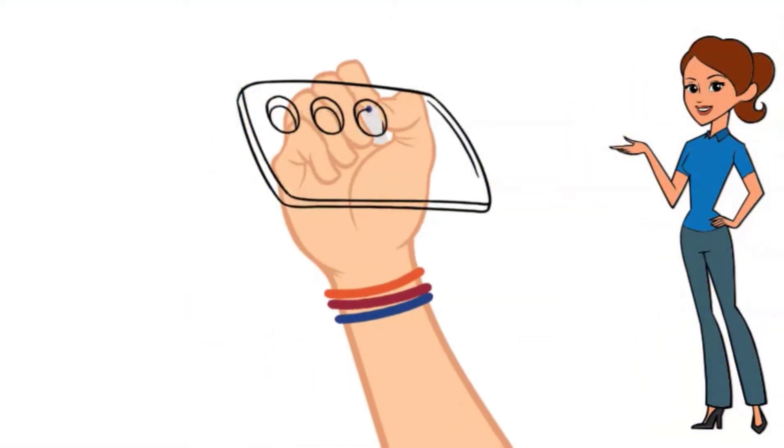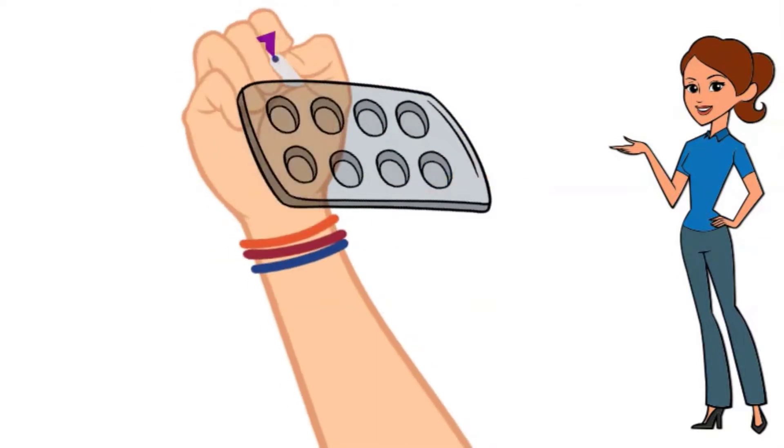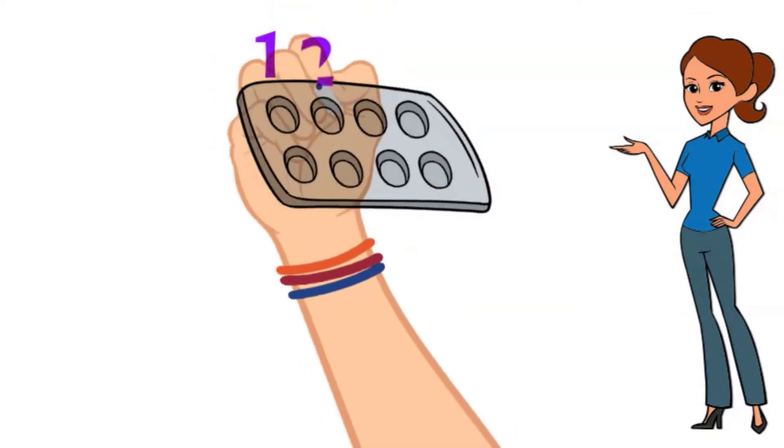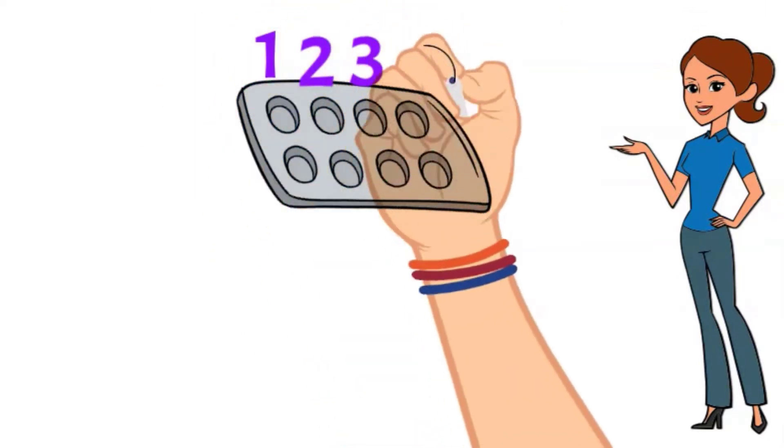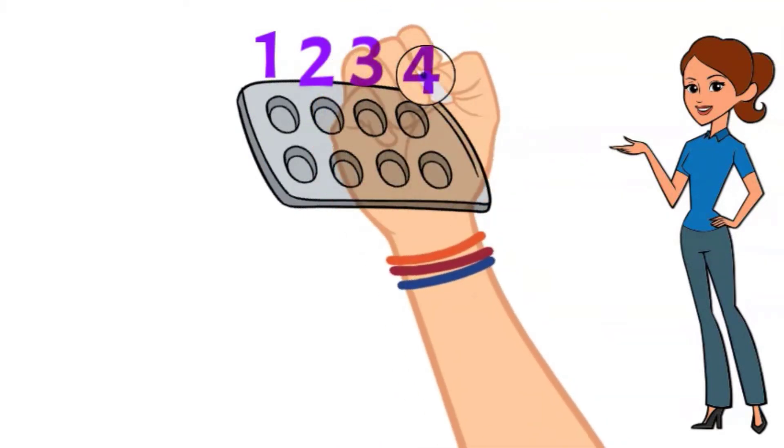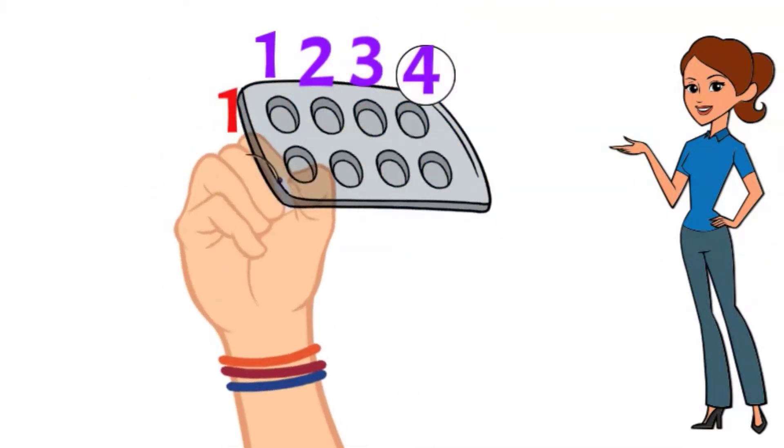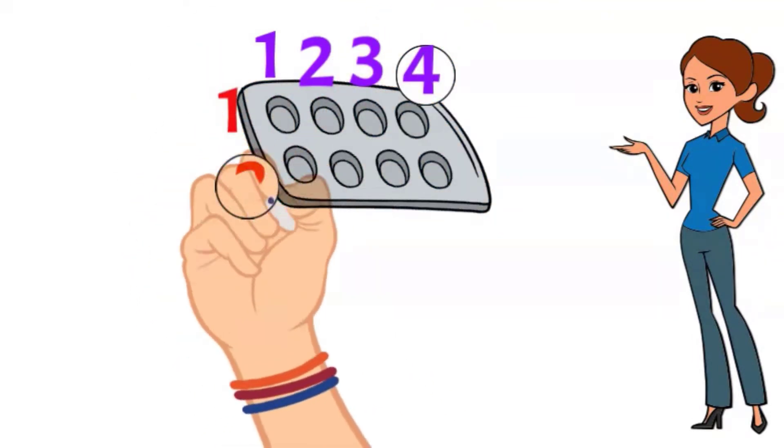Here's an egg carton. The egg carton has one, two, three, four total columns. The egg carton also has one, two rows.